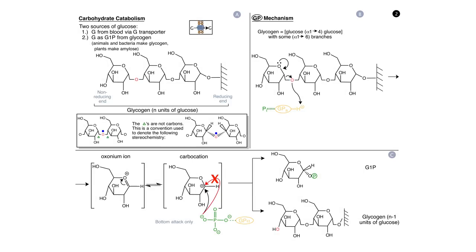Let's look at storyboard two. We're going to look in more detail at carbohydrate catabolism. We're eventually going to be doing the pathway of glycolysis, but we have to get there first. It depends on what precursors are available to enter glycolysis. One option is to take in glucose from the blood by way of a glucose carrier and then phosphorylate it using either hexokinase or glucokinase.